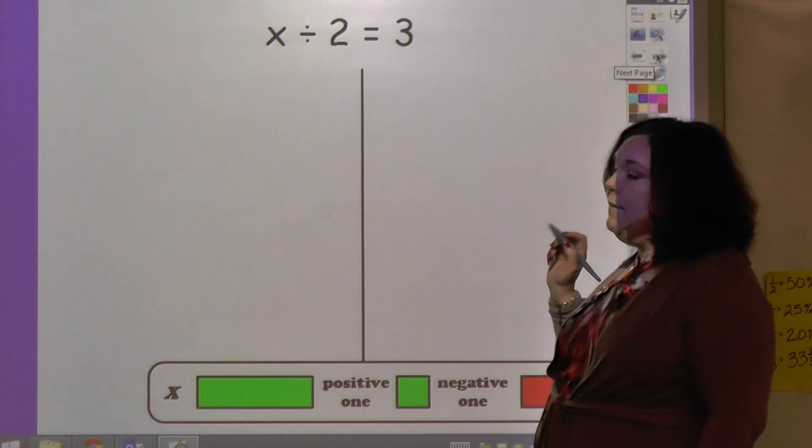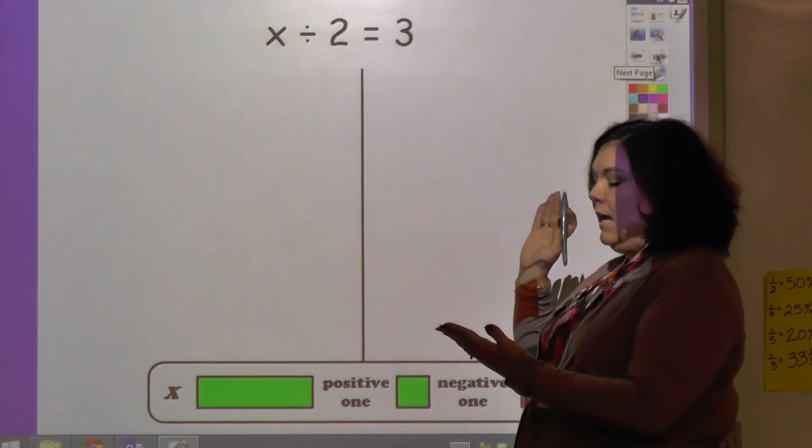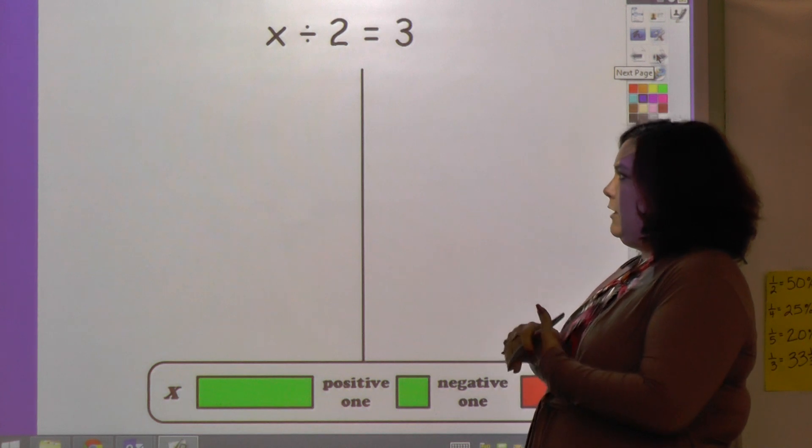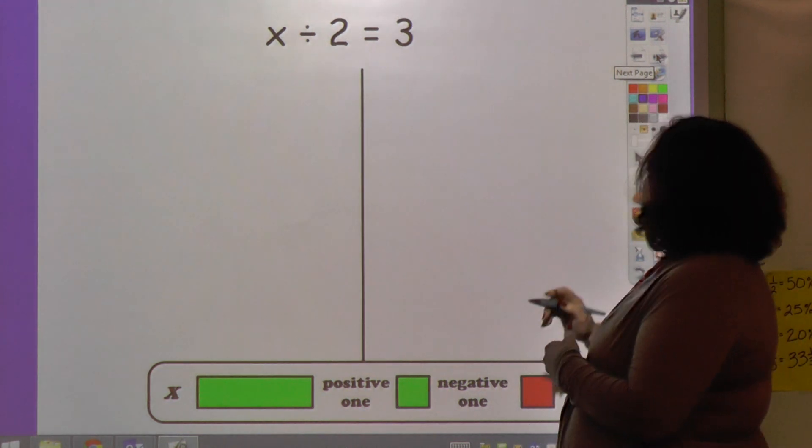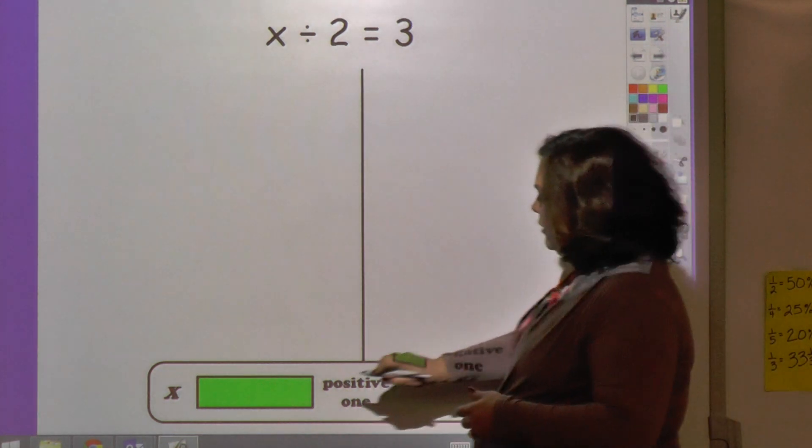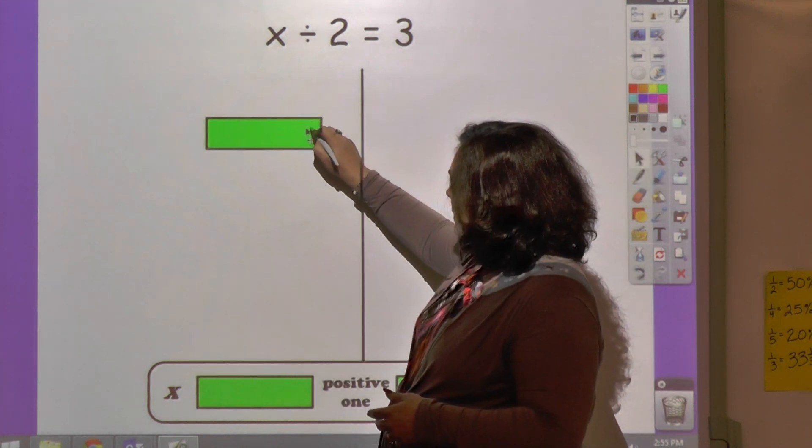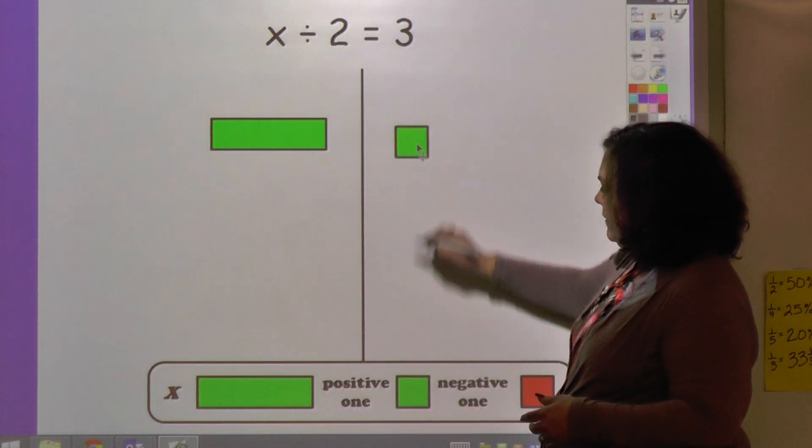So now we have division. We have looked at multiplication with positives and negative numbers. Now we have division. The way that I show this: I still have x divided by 2, and I've got 3 positives. 1, 2, 3. And this x divided by 2 looks like this.